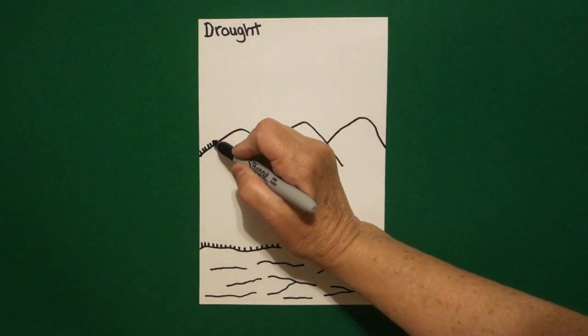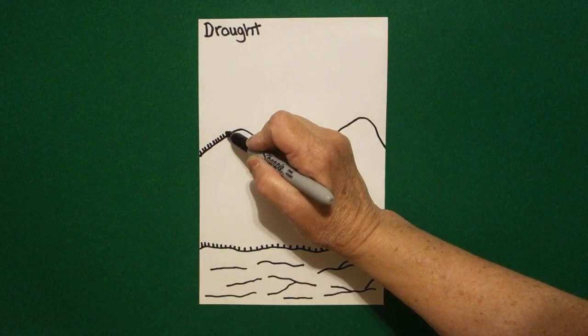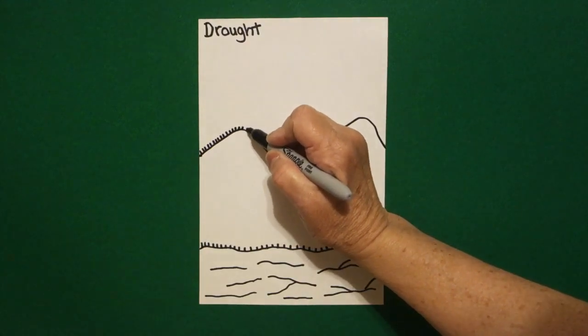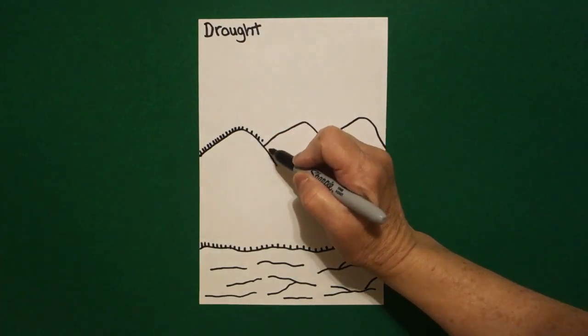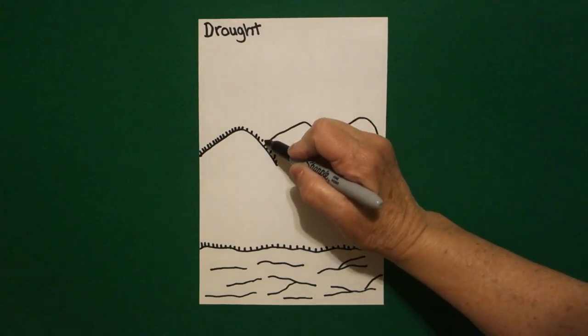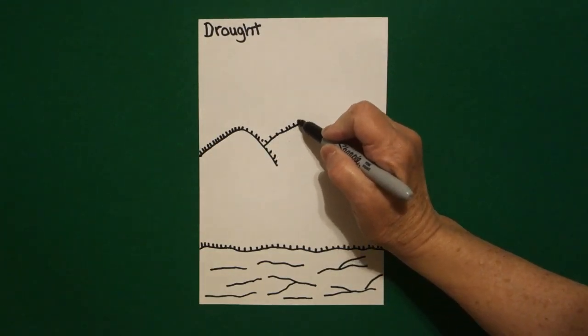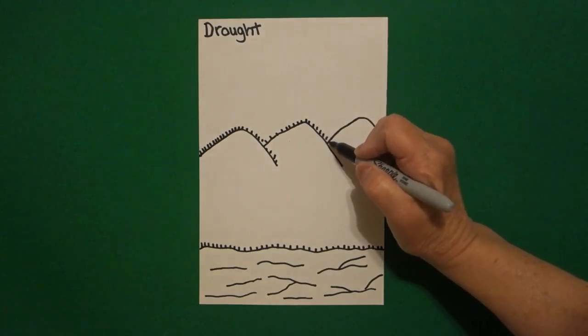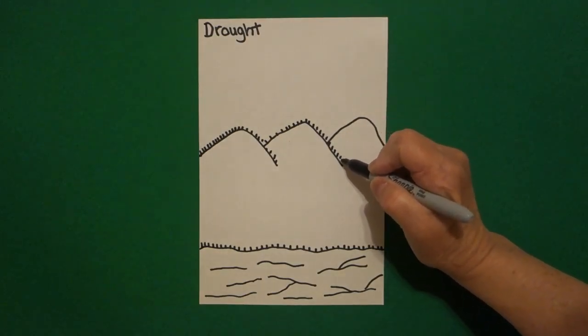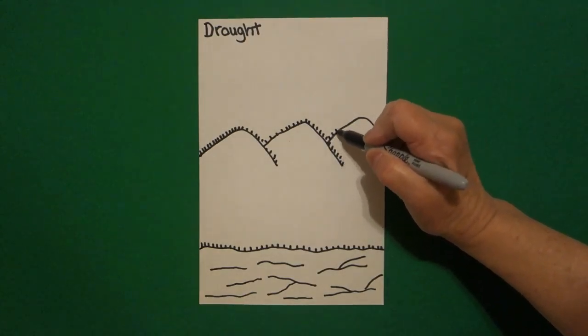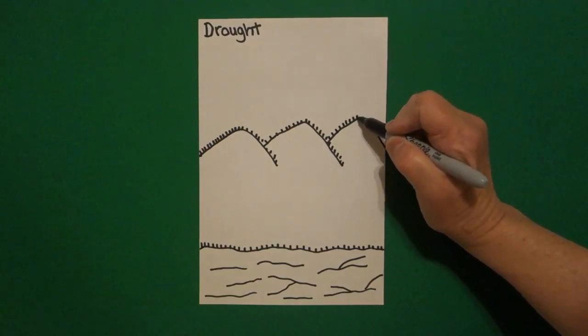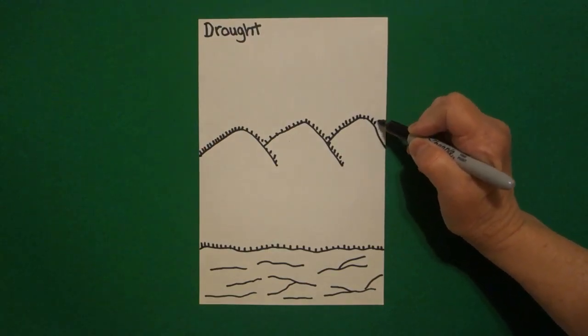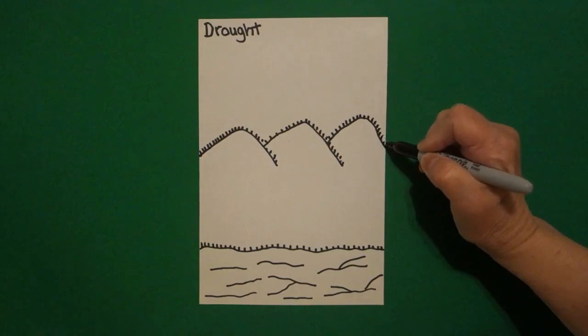And they also are covered with little straight lines all the way across the tops, down the sides, on the bottoms. And again, these little straight lines represent that there is some growth, plant growth, but it's very, very dry. And it covers the mountain, the foothills.